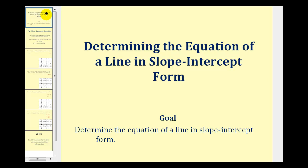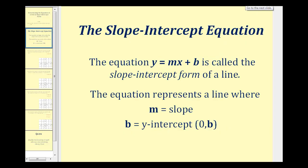Welcome to a lesson on determining the equation of a line in slope-intercept form. The equation y equals mx plus b is called the slope-intercept form of a line, where m equals the slope and b equals the y-intercept. Based upon the information we're given, if we can identify the slope and the y-intercept, we can write the equation of the line.